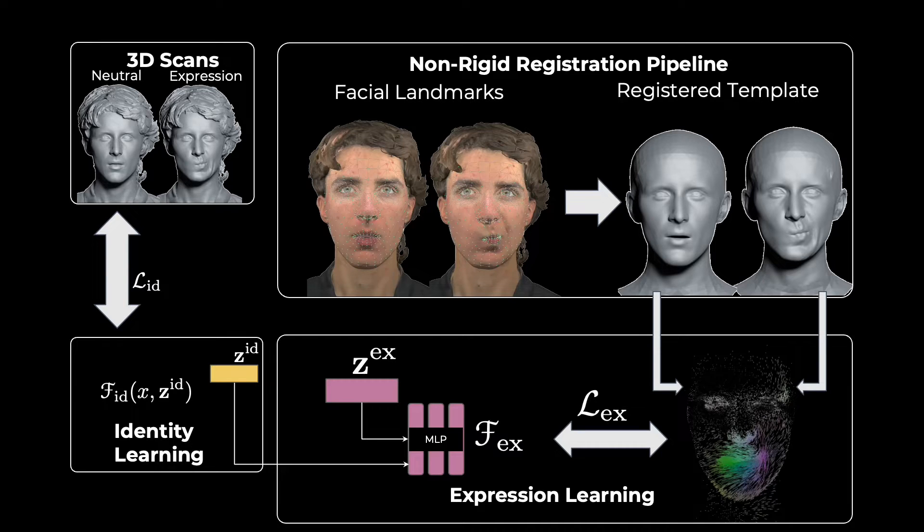To encourage a disentangled representation, our expression network is conditioned on both identity and expression codes.